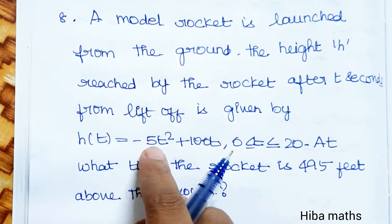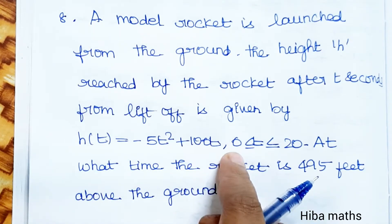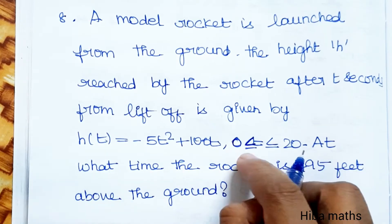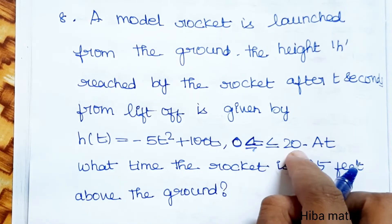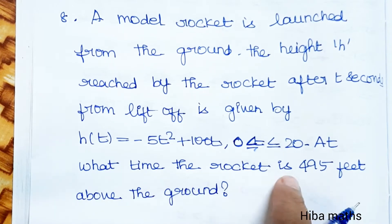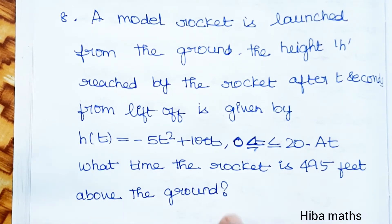h of t is equal to minus 5t squared plus 100t, where t is greater than or equal to 0 and less than or equal to 20. At what time is the rocket 495 feet above the ground?